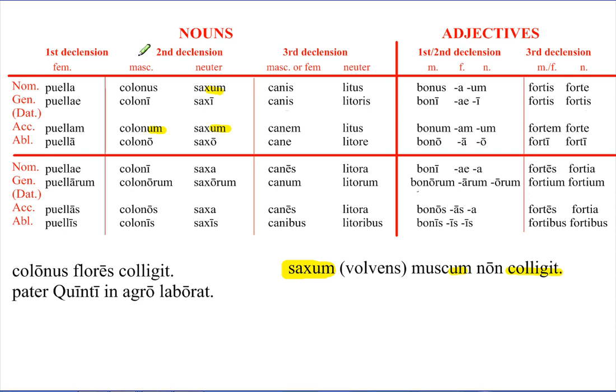But in context, it's pretty clear that it means a rolling stone does not gather moss, in which case then muscum is accusative. Muscum. Saxum volvens muscum non colligit. Okay, so, but maybe, let's see another one. Here, this sentence, puer iacit, the boy is throwing saxum, a rock. Here the context is making it pretty clear that saxum here is accusative. The boy is throwing a rock. So just pay attention to the context it should be clear.